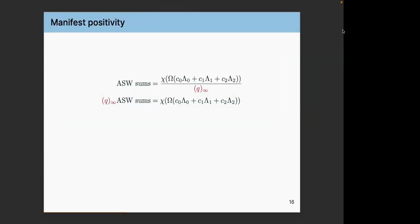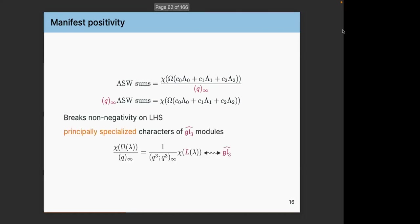I kept talking about this q-infinity factor. If you wanted identities involving just the principal character, you multiply out by q-infinity, but on the sum side you're breaking manifest positivity because expanding q-infinity involves a bunch of signs. But if you keep q-infinity in its rightful place, there is a way to think of this object as coming from principally specialized characters of GL3-hat modules, which is a perfectly respectable algebra, so it doesn't bother me much.